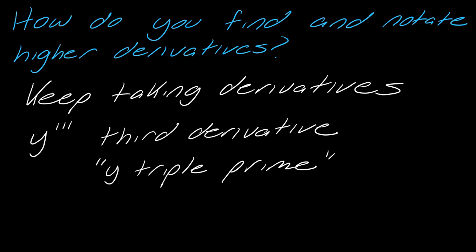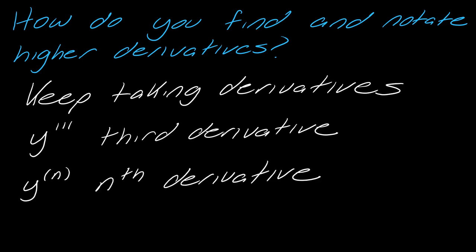And like I said, you say y triple prime. And then you might be thinking, what if I don't know what comes after triple or quadruple or quintuple or so on and so forth. So don't worry. After the third derivative, we just start writing this and we just plug in a number here. So four, five, six, a hundred, however many derivatives you want, you just plug those in here. And that's what's going to indicate the nth derivative.